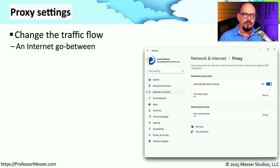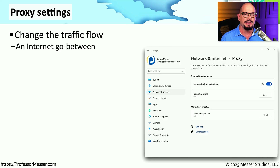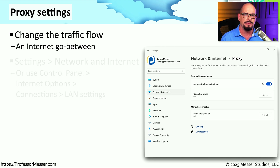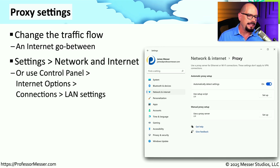Proxy servers sit on your network as an intermediate device between you and the rest of the network. This is often used as a security tool to protect you from the internet. Because the proxy server is sitting in the middle of the conversation, it can send requests on your behalf, receive the answers to those requests, confirm that the answer is legitimate and won't harm your computer, and then send you the response. You can configure these proxy settings in your Control Panel under Internet Options, Connections, and LAN Settings.